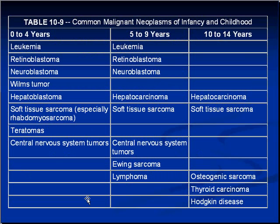This table gives a general overview — not to be memorized. Leukemias are the most common tumors in kids all the way up to age 10, and leukemia in a child after age 10 is really not very common at all. Retinoblastomas — malignant tumors of the eye — neuroblastomas, and Wilms tumors are all seen in the younger kids.